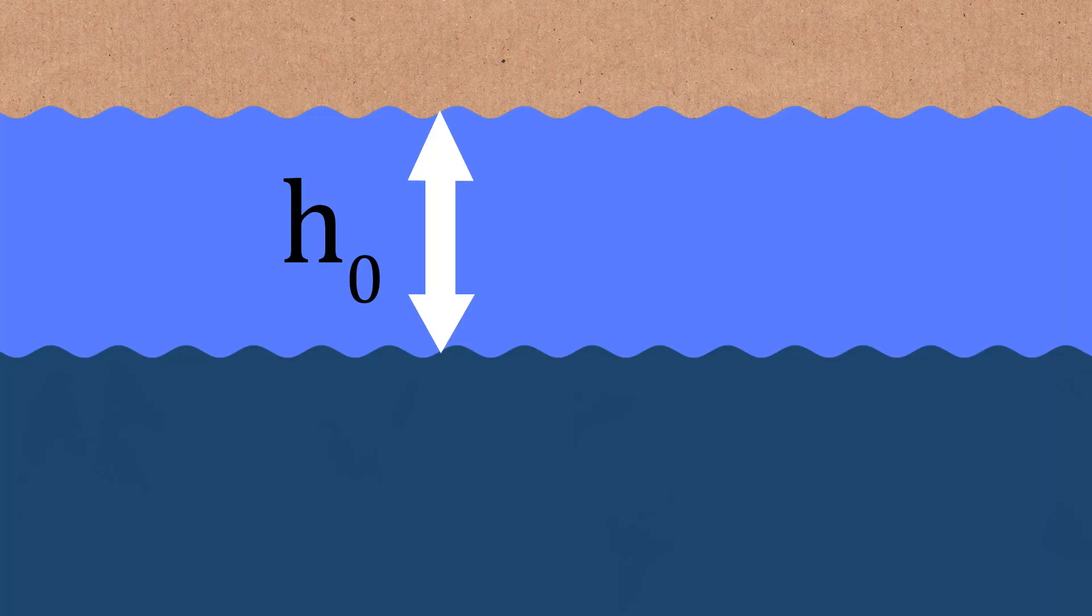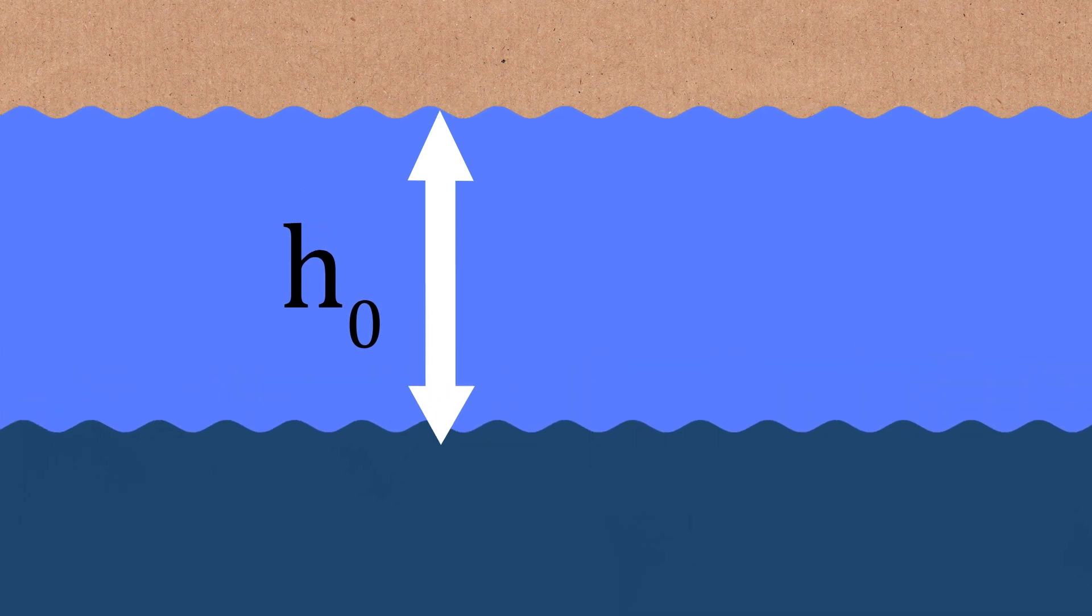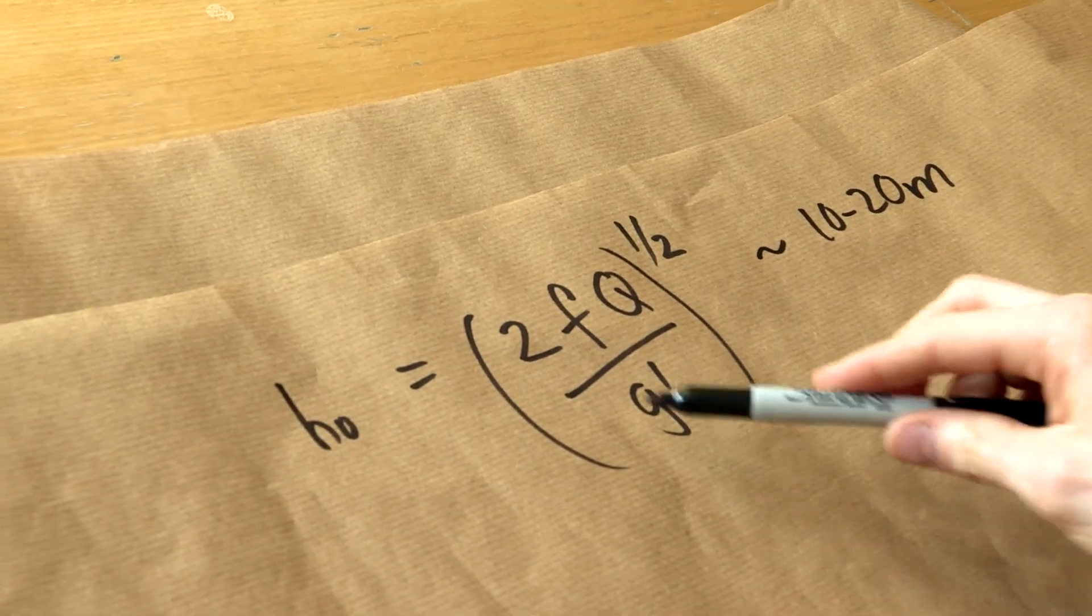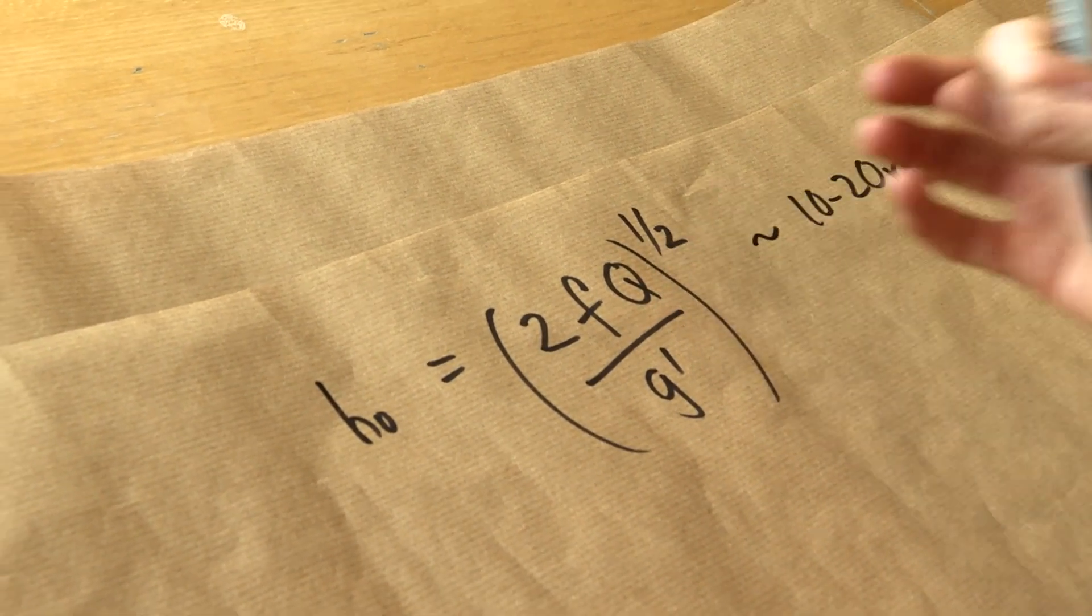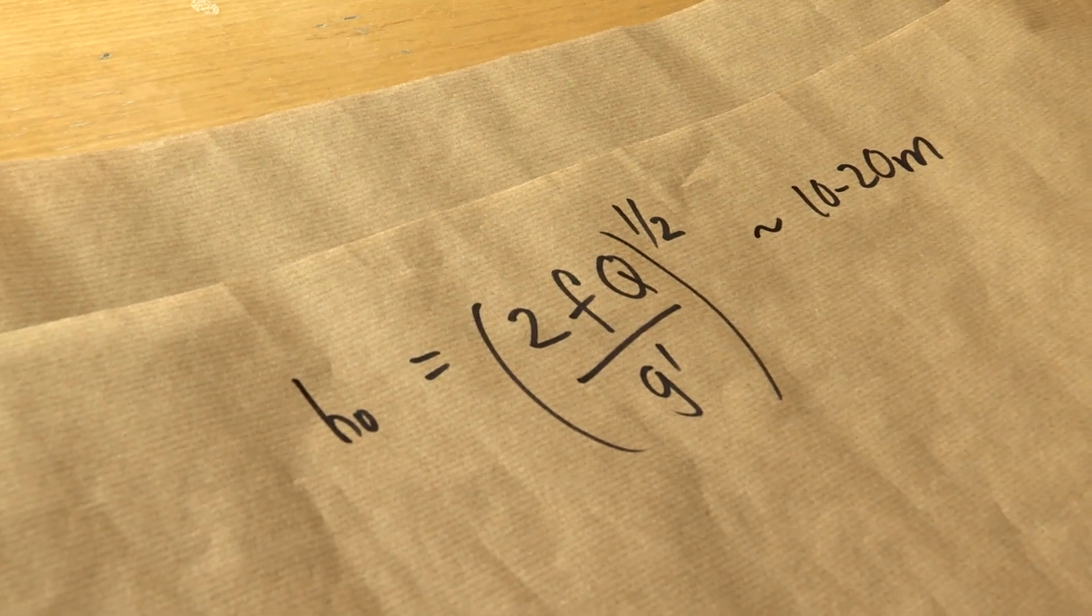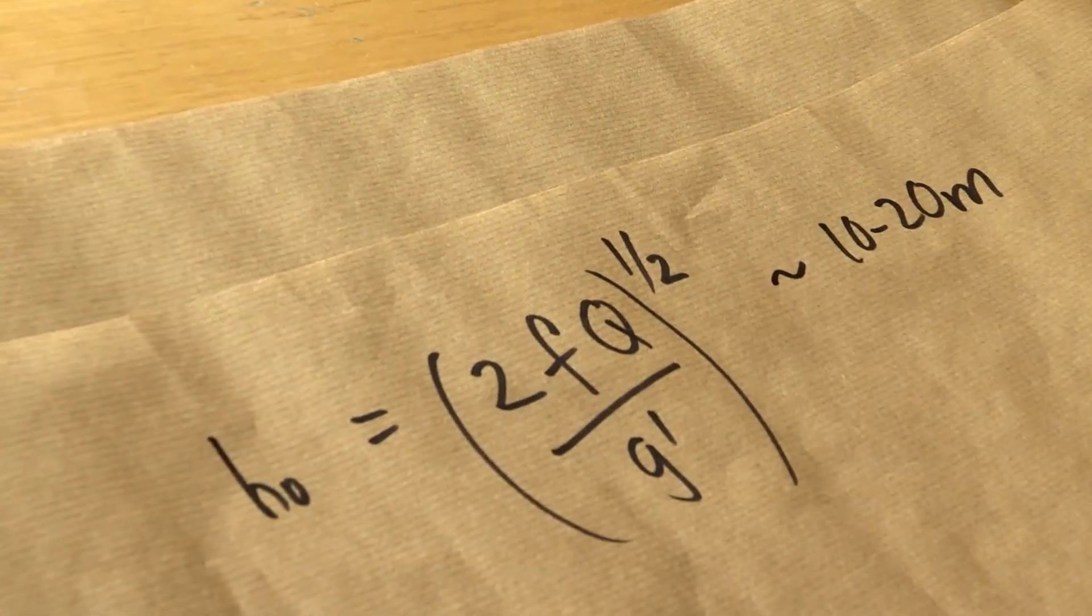So how deep does that give us? What kind of depths? So for the river Rhine, this guy comes out at about 10 to 20 meters, because of course it will vary depending on the season. So in the summer there's a smaller volume flux, the densities might be more similar, whereas in the winter really large volume flux.